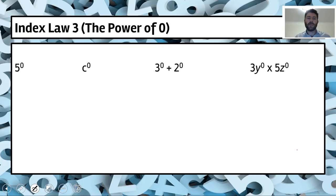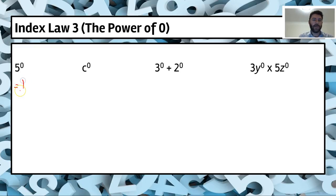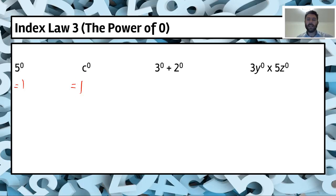Let's look at some examples. Five to the power of zero — the answer is one. c to the power of zero — one. Now three to the power of zero plus two to the power of zero: three to the power of zero is one, and two to the power of zero is one.